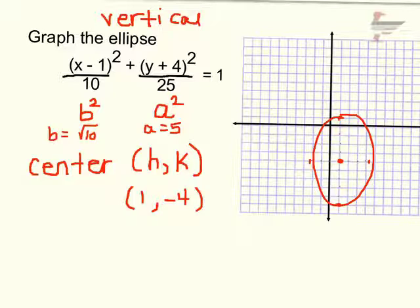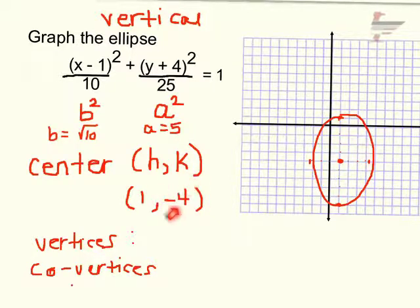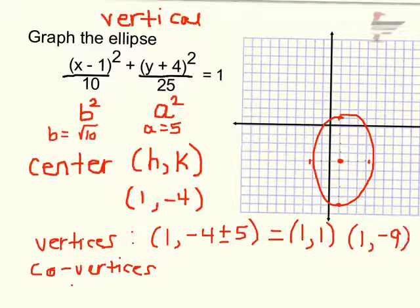You'll also be asked to list the vertices and co-vertices. The vertices are in the y direction, 5 units from the center. So I take center (1, −4) and add or subtract 5 to the y value: negative 4 plus 5 is 1, giving vertex (1, 1); negative 4 minus 5 is negative 9, giving vertex (1, −9). You can see both those points on the graph.